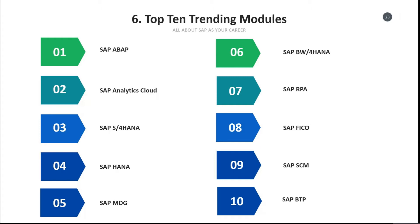The first in the list, and one of the most evergreen modules in SAP, is SAP ABAP. It is a technical module — the only SAP module that was used to code the entire SAP.